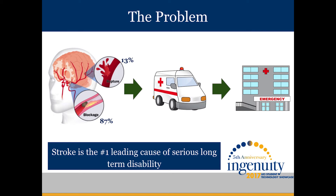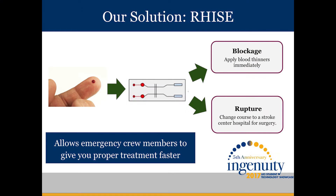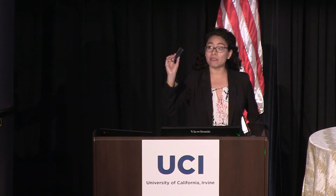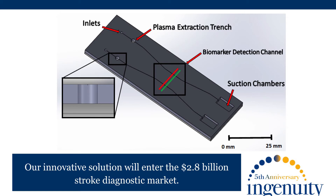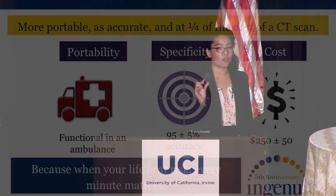This is why Sansani Medical created RICE. RICE can differentiate your type of stroke before reaching the hospital from a drop of blood. RICE can separate blood cells from plasma, allowing us to detect biomarkers from rupture and clots in your brain. RICE is more portable, as accurate, and one-fourth of the cost of a CT scan. Because when your life is at risk, every minute matters. Thank you.